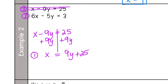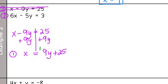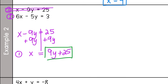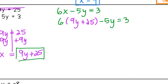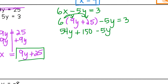Now substitute that expression into x of equation two. So: 6 times (9y plus 25) minus 5y equals 3. Distribute the 6: 6 times 9 is 54y, and 6 times 25 is 150. Then minus 5y equals 3. Combine like terms — the y terms: 54y minus 5y is 49y. So 49y plus 150 equals 3.